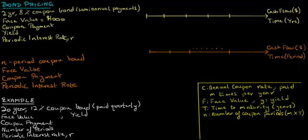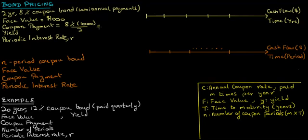Since this is an 8% coupon bond where coupons are paid semi-annually, each coupon payment is worth 8% of the face value of $1,000 divided by the number of coupon payments in a year, which equals $40.